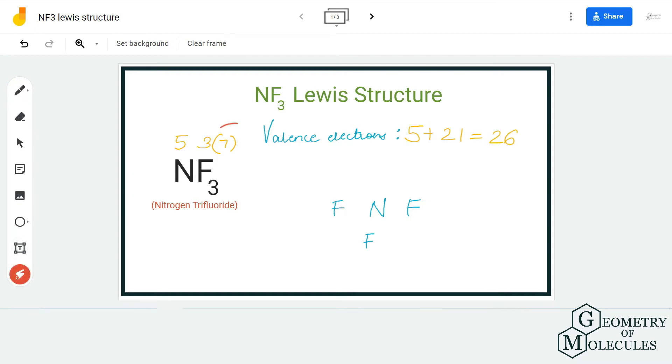We are going to multiply this number by three because there are three fluorine atoms, and as a result we have 26 valence electrons for this molecule. Once you know the number of valence electrons, you can place the nitrogen in the center.